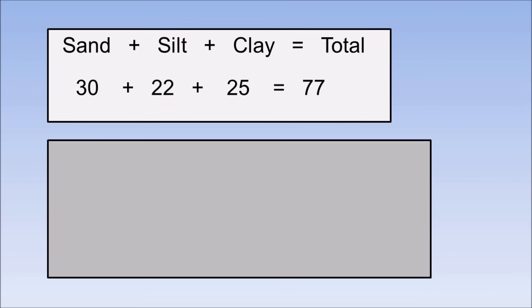To convert these numbers to percent, we do the following calculation. Percent sand is equal to 30 divided by 77 times 100, or 39%.